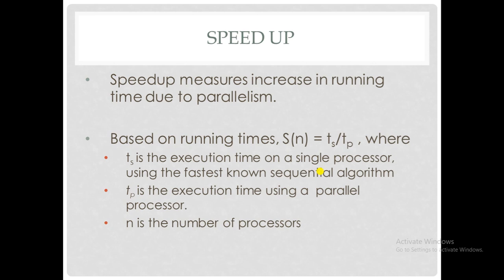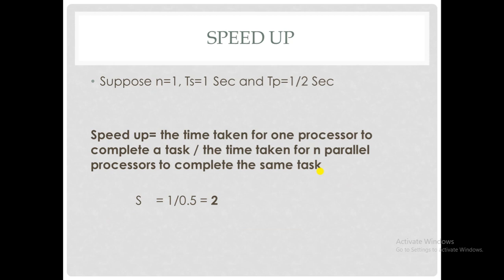Consider an example. If a single processor finishes a task within time t, how much time do two processors take to finish the same task? Obviously, one half. Suppose one processor takes one second to finish one task, so T1 equals 1 second, and n processors take 1 by n seconds. For two processors, Tp equals 1 by 2 seconds. Speedup is the time taken for one processor divided by the time taken for n parallel processors to complete the same task.